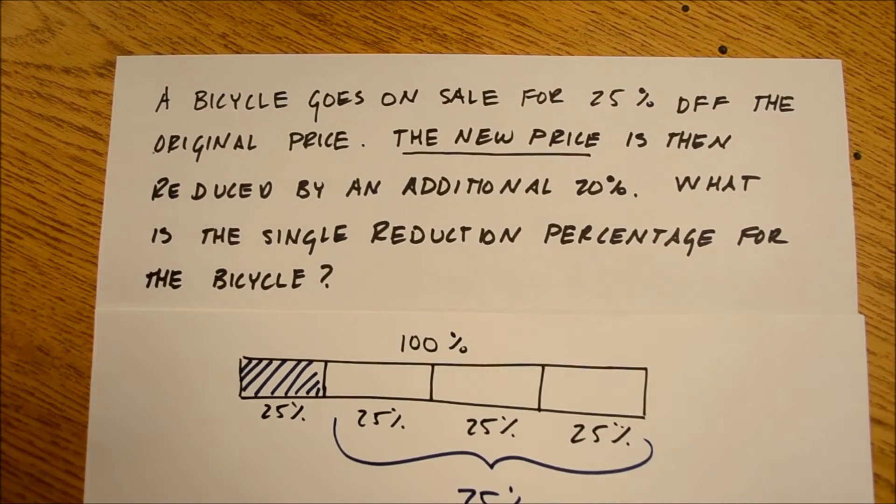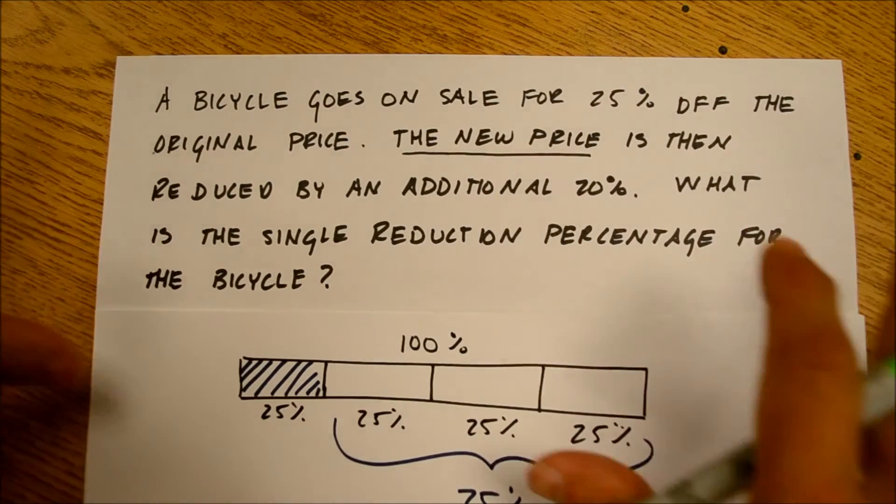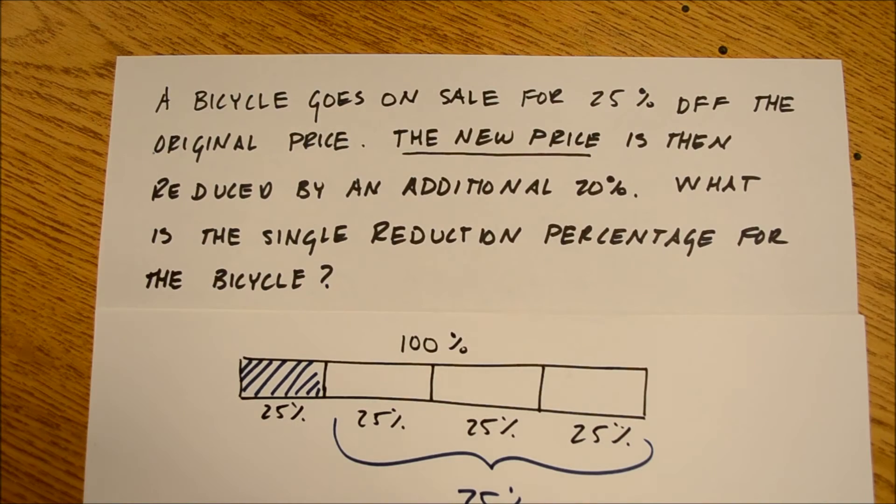No matter what the original price is, and some of the kids had a hard time with this, but this helps. Some of the kids really wanted some type of original price. They wanted the $6.50, and then they could take 25% of that. What we're trying to get across is that this can be used for any price because we're dealing in percentages.